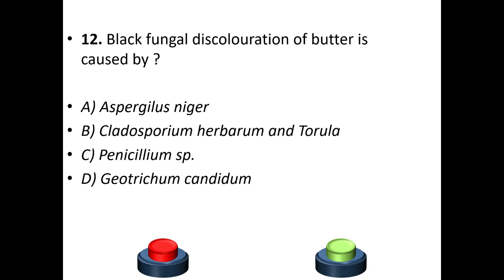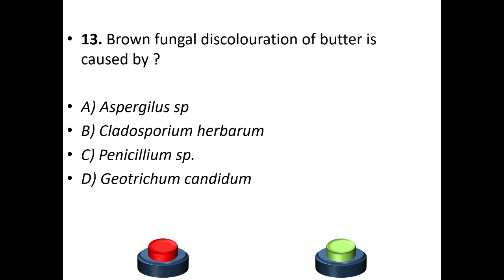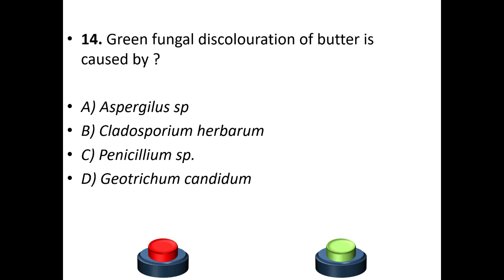Your answer for question 12 is option D — Cladosporium herbarum and Geotrichum candidum. Thirteenth question: brown fungal discoloration of butter is caused by A: Aspergillus species. B: Cladosporium herbarum. C: Penicillium species. D: Geotrichum candidum. Your answer is option A — Aspergillus species.